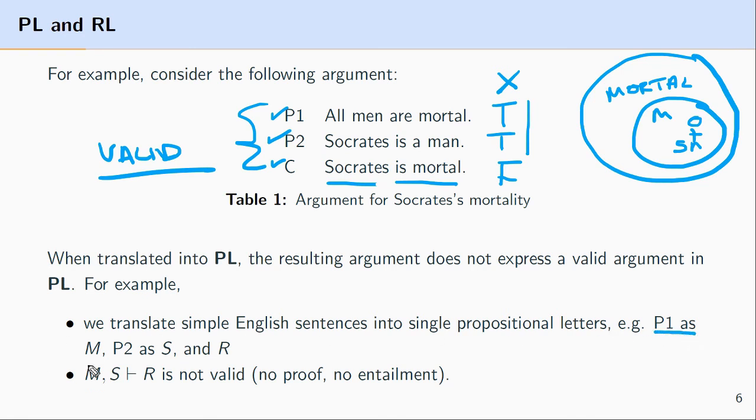For premise one right here, we might translate it as M. So all men are mortal, we just let that be translated into the language of propositional logic as M. Premise two, we can translate as S. And the conclusion, we can simply translate as R. So what this gives us, in the language of propositional logic, is M, S, therefore R.